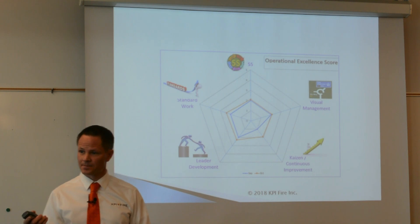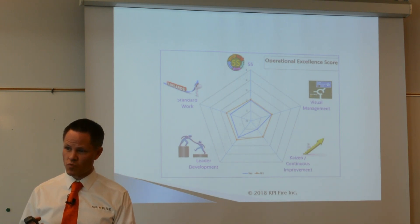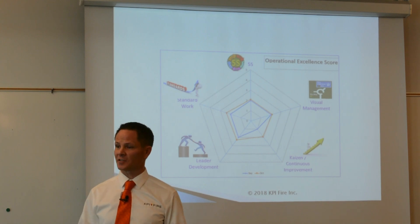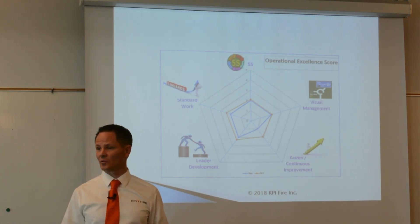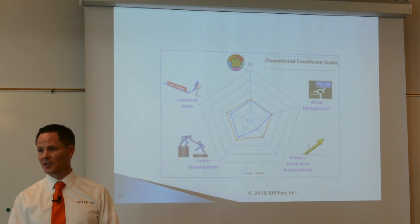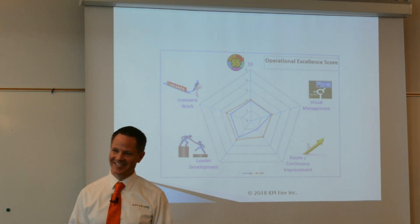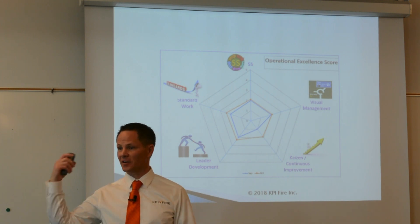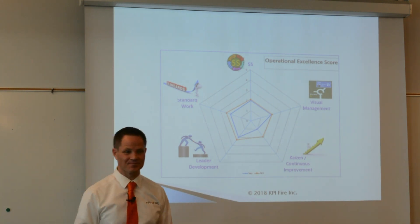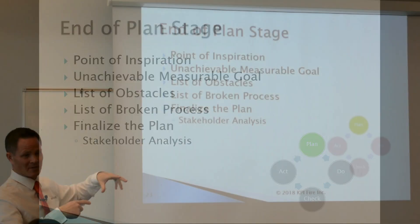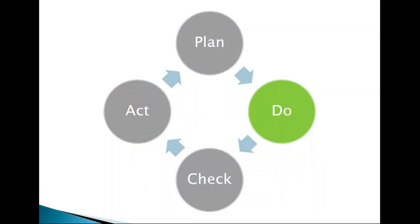Quick explanation of 5S: it's workplace organization — a place for everything and everything in its place, easy to find, easy to do your work, and visual. It's an acronym for Sort, Set in Order, Shine, Standardize, and Sustain — originally in Japanese. The five steps are basically a way to get your workplace to be efficient and look great, like that transparent factory. At the end of the planning stage you have inspiration, a UMG, a list of obstacles, and broken processes to fix.